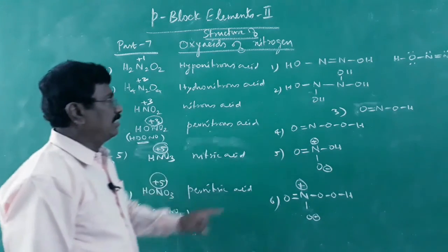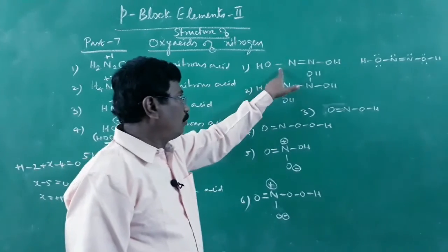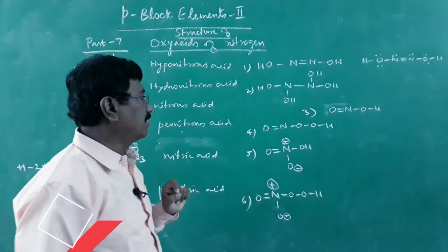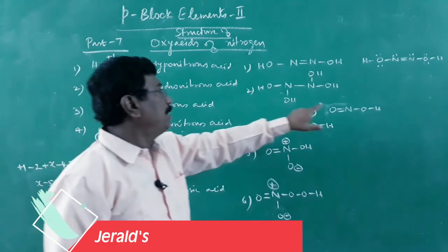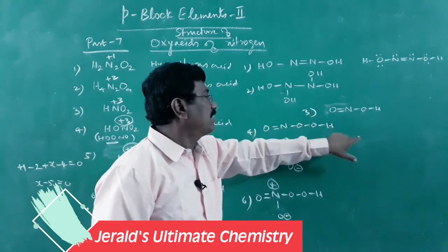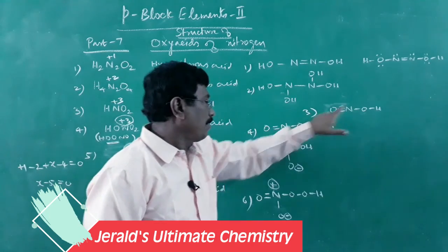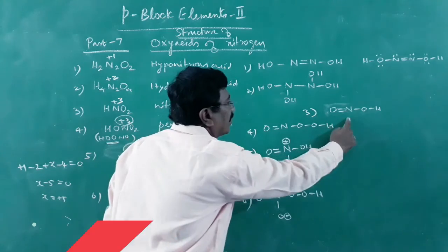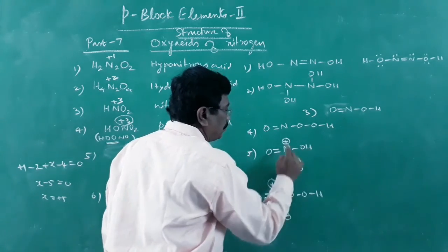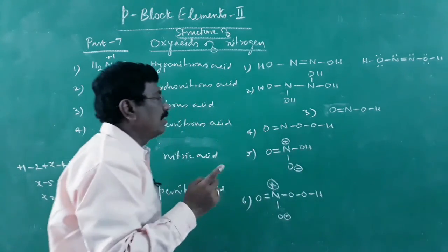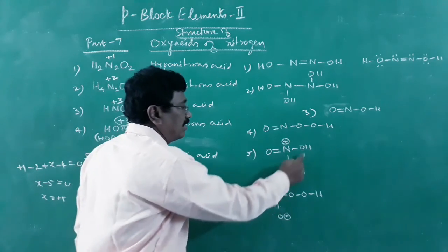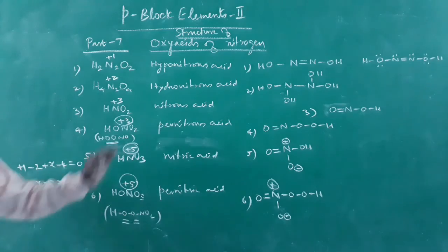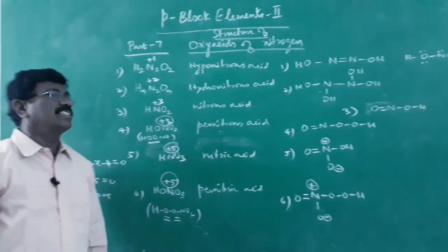To summarize the structures: hyponitrous acid has N=N with OH on each side; hydronitrous acid has N−N single bond with two OH groups on each nitrogen; nitrous acid is HO−N=O; pernitrous acid has an extra oxygen giving HO−O−N=O; nitric acid is N double bonded to O with coordinate bond and OH; pernitric acid adds one more peroxide oxygen. That covers the oxidation states and structures of all oxyacids of nitrogen. Thank you.